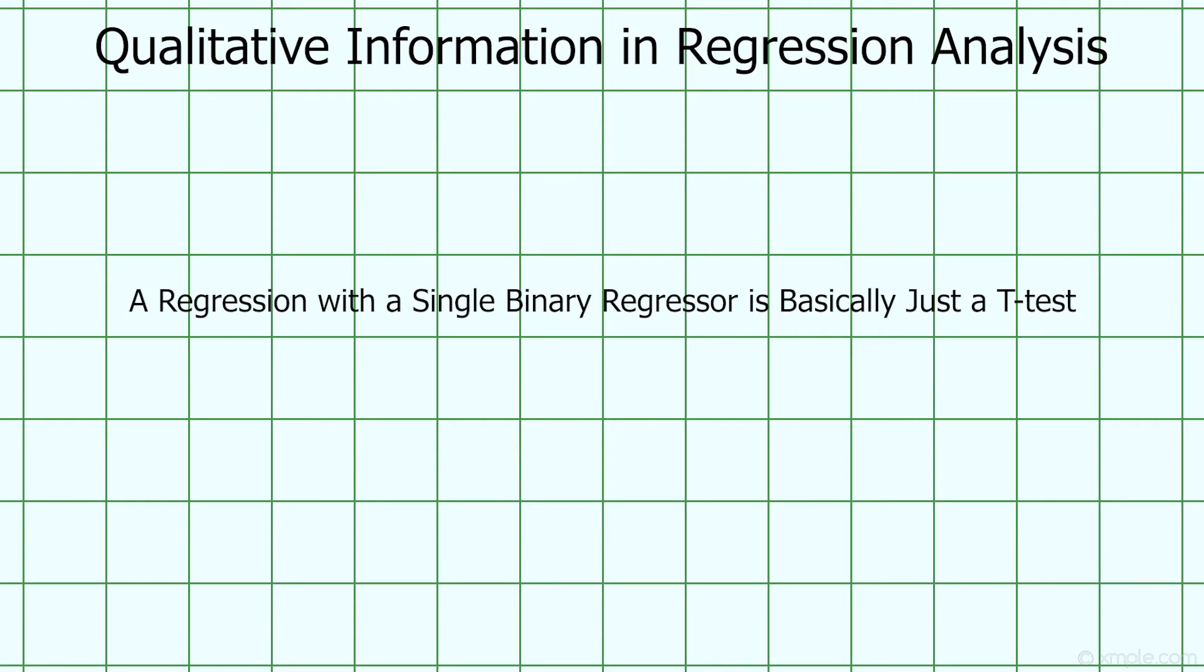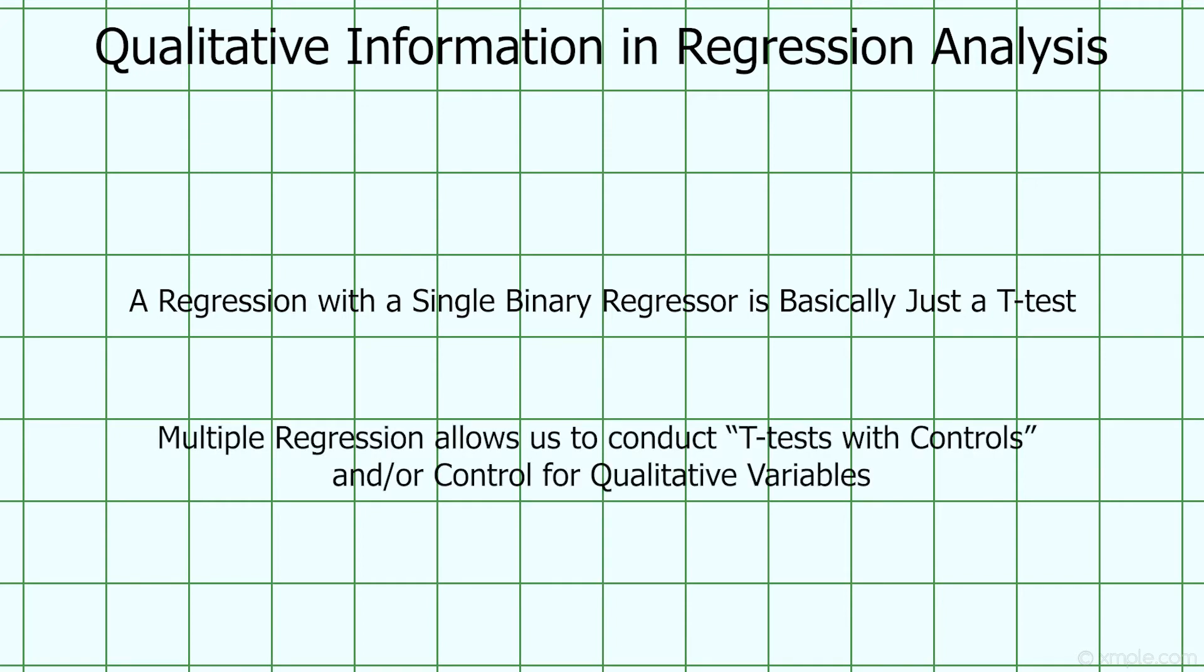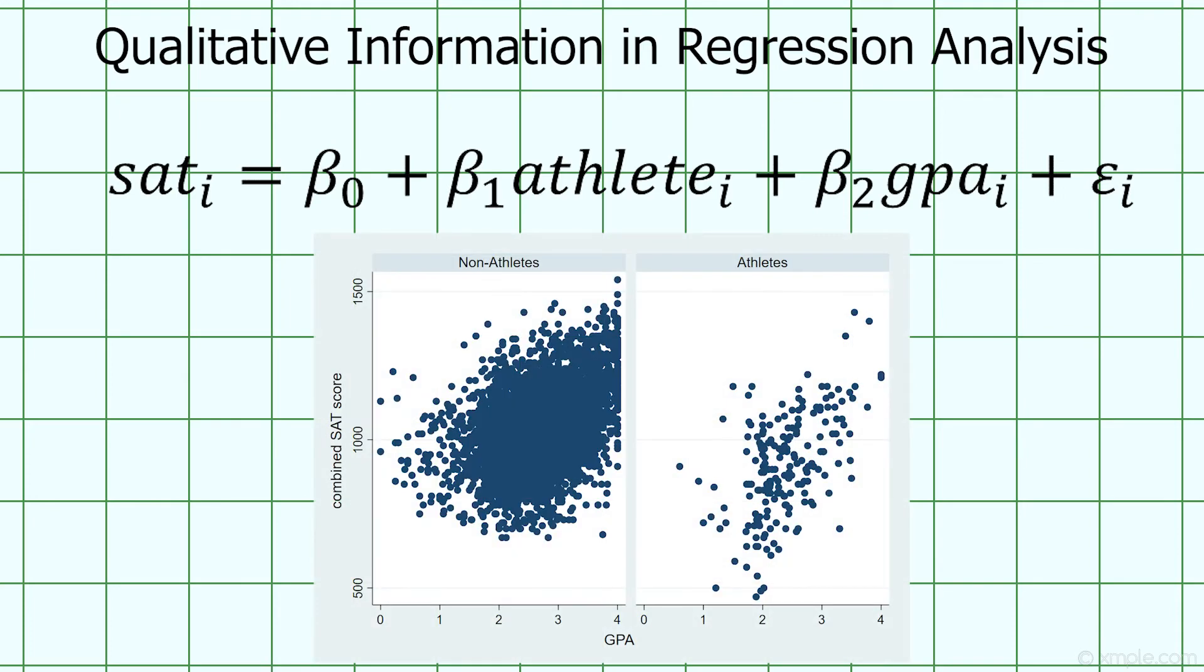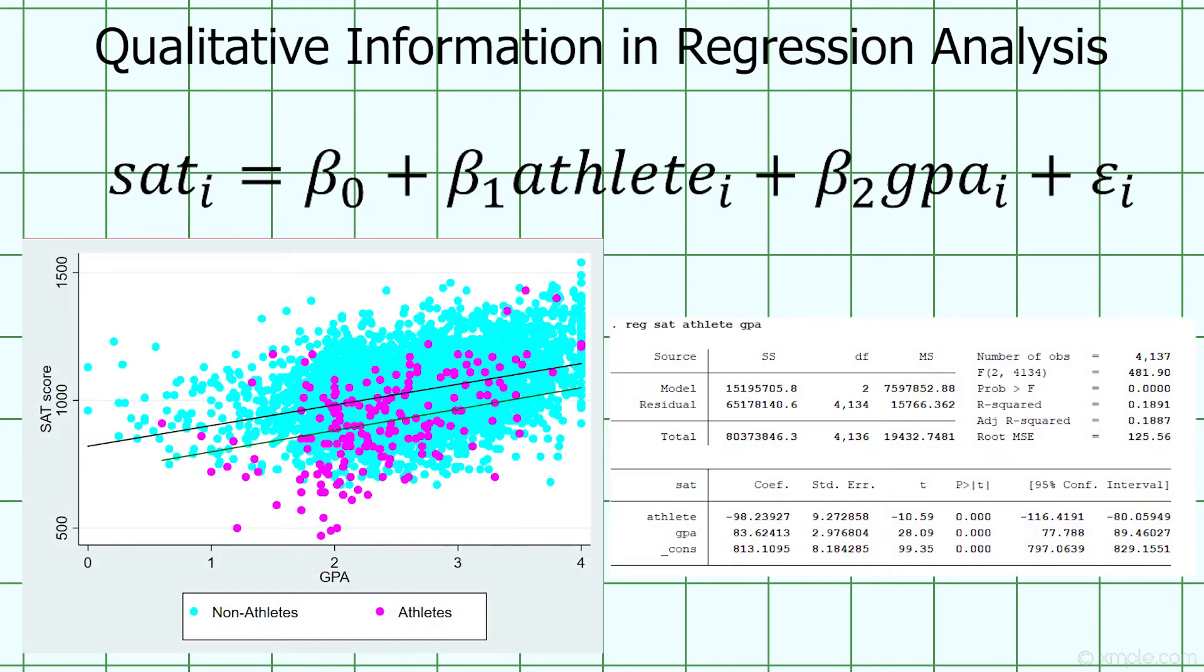When we use binary variables in regression, the coefficient is going to be equal to the difference in the average value of the dependent variable for the group for which the binary variable equals one and the group for which the binary variable equals zero, after controlling for the effects of other included variables in the regression. Now we can build regression models that incorporate both continuous and categorical variables. For example, this model estimates the effect of high school GPA and being a student athlete on SAT scores. What we're doing with this model is conditioning on the athlete variable, estimating the relationship between GPA and SAT scores for athletes and non-athletes separately, and then taking a weighted average of the two coefficients, using the size of the athlete and non-athlete groups as weights. The coefficient on the athlete variable here represents the average difference in SAT scores between athletes and non-athletes after controlling for the possibility that athletes and non-athletes have different GPAs.